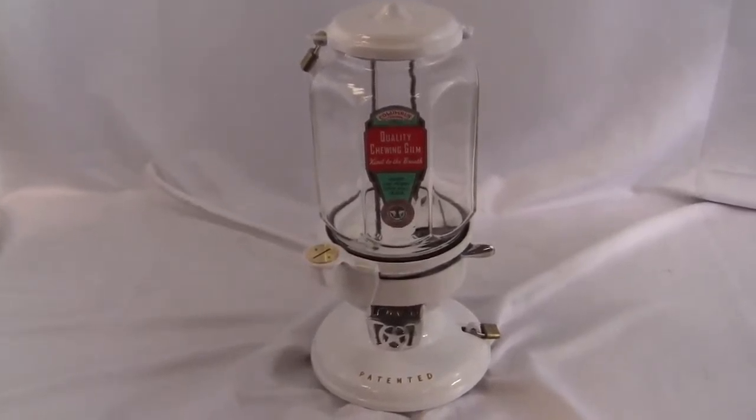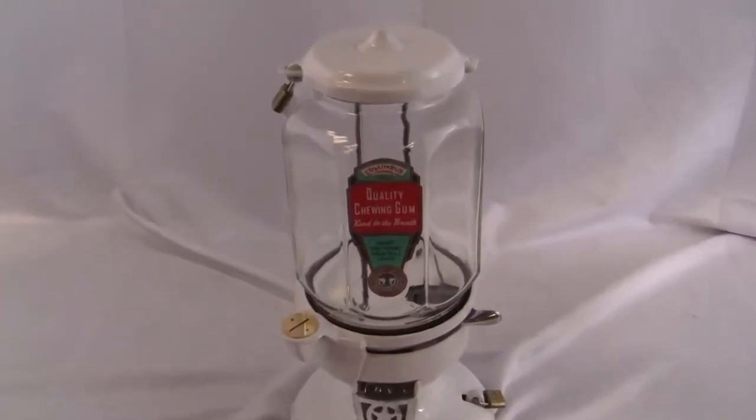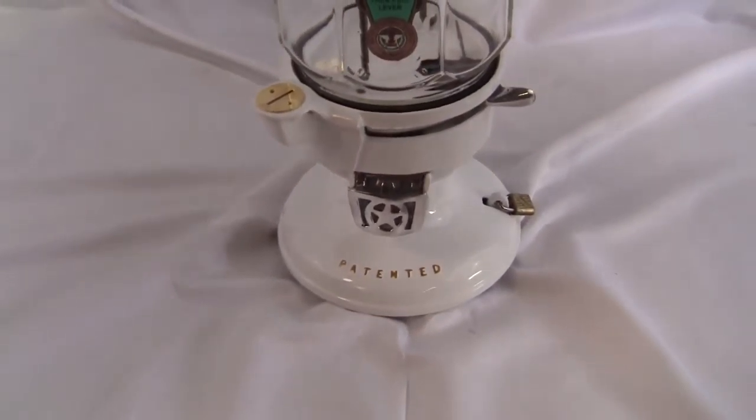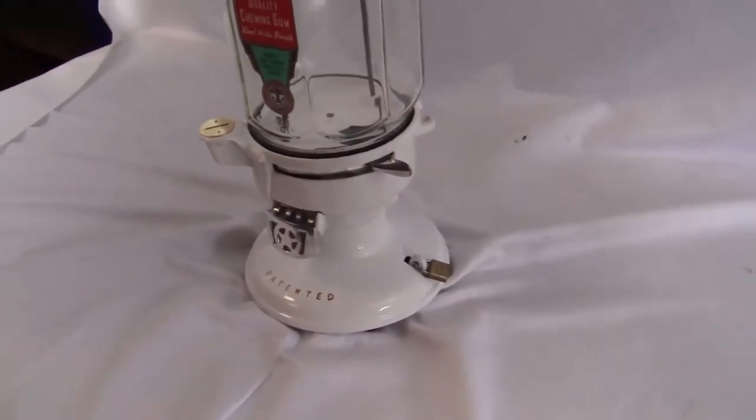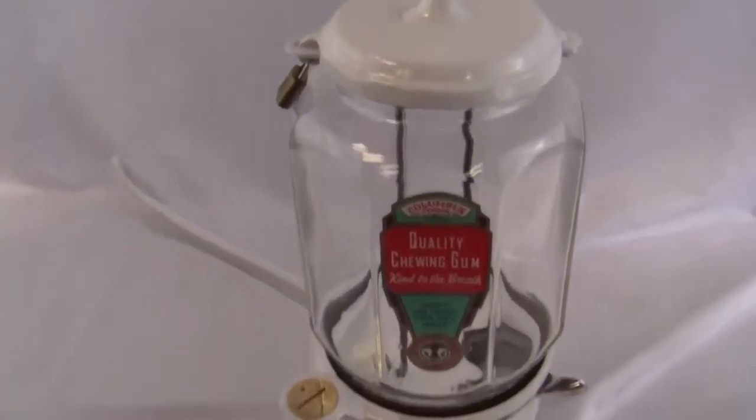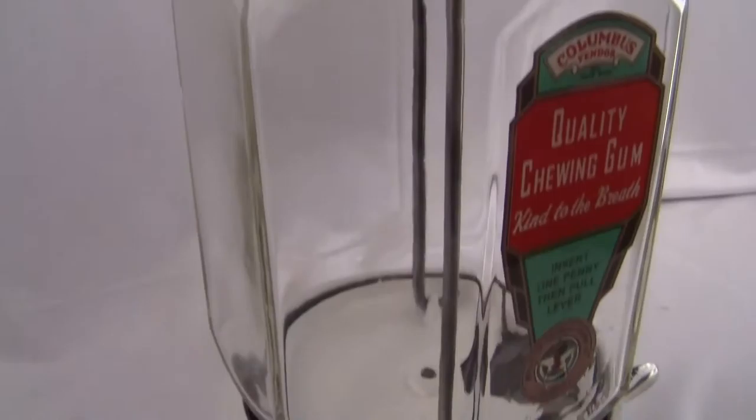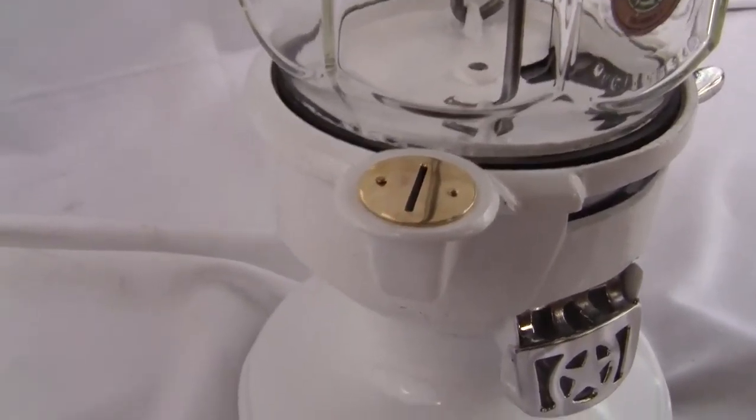Okay, up for sale is an original Columbus Model A gum and peanut vending machine. I'll go over what parts are original and what have been recast on this machine in just a second. I just want to give you a good overlook of the machine. It has been painted in white as some were back in the day when they originally did these machines.